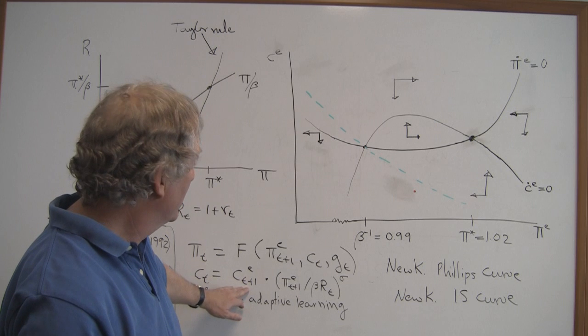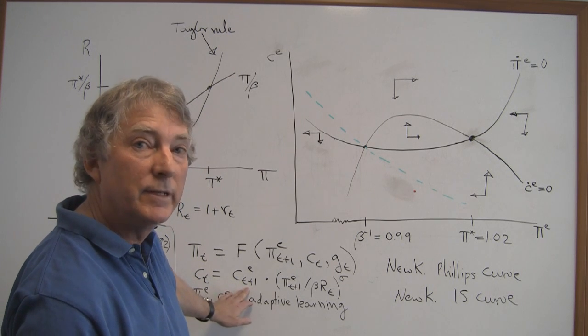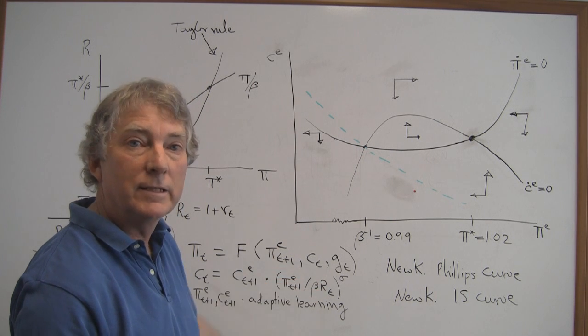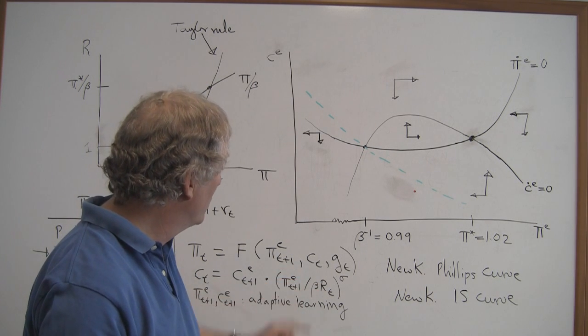Consumption depends on expected consumption in the next period, and on the discount factor, beta, and on the ex ante real interest rate, RT over pi T plus 1.